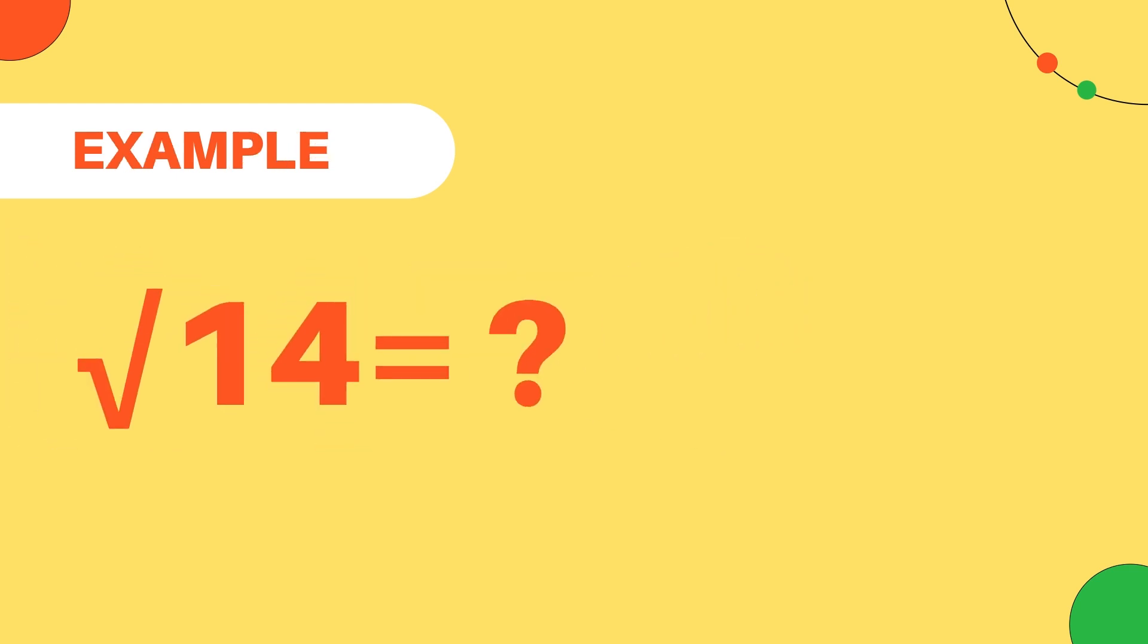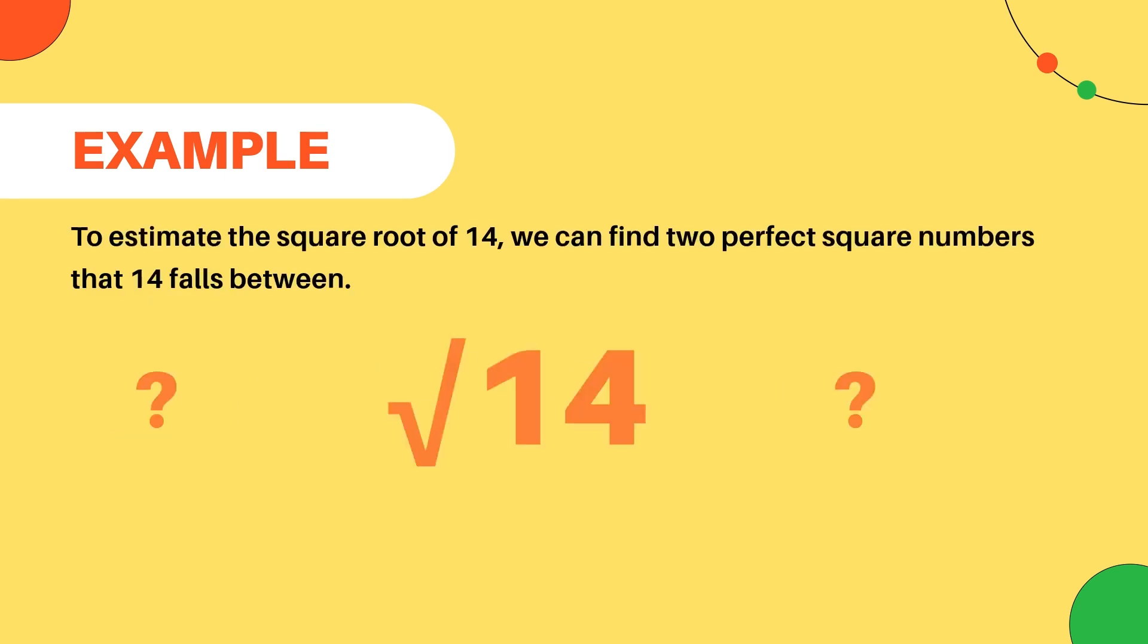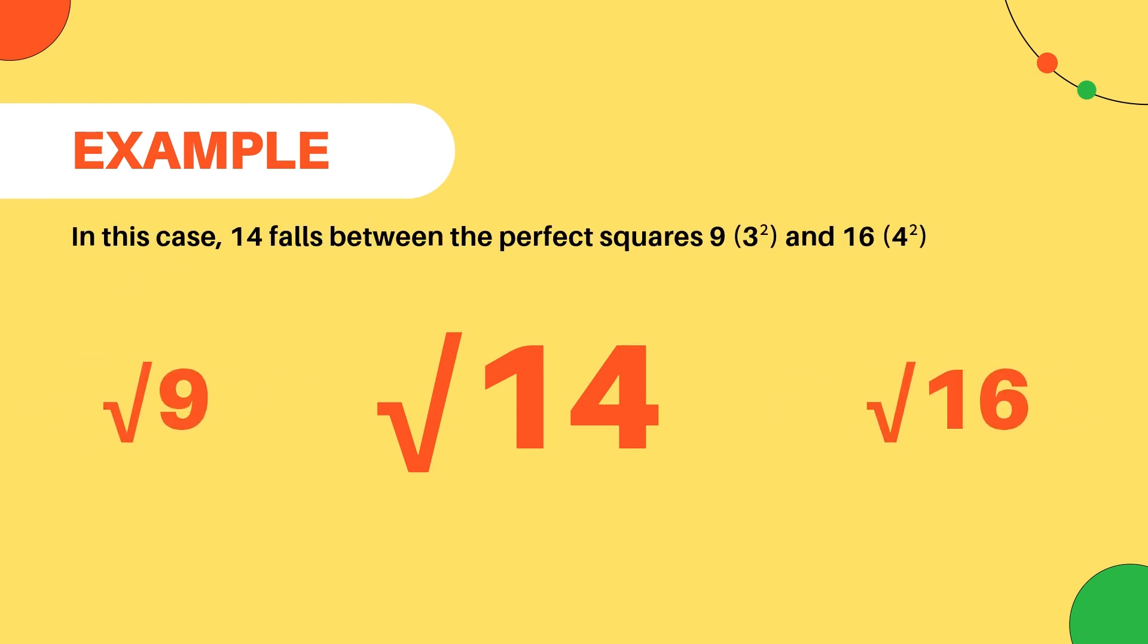For example, let's estimate the square root of 14. To estimate the square root of 14, we can find two perfect square numbers that 14 falls in between.